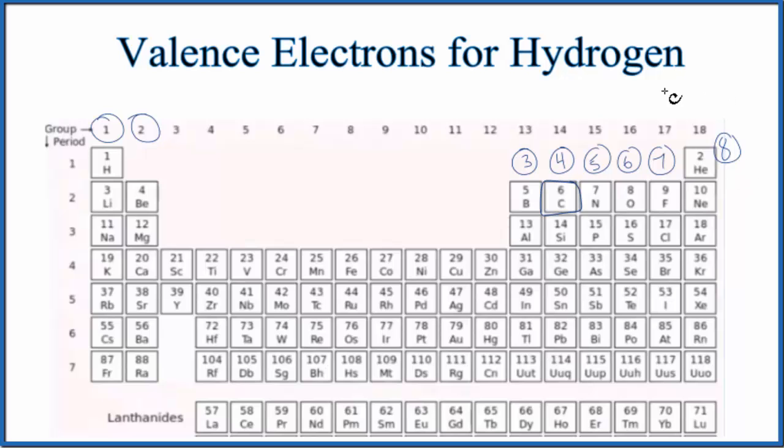The first way is just to look at the periodic table. So we look at the periodic table and we look at the group number. All of these elements here in group 1 right here, they have one valence electron. And there's hydrogen. Group 1, one valence electron.